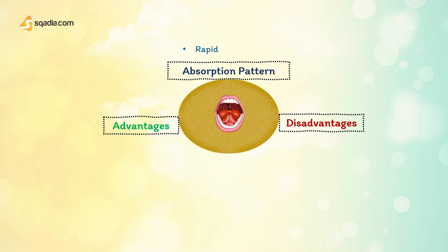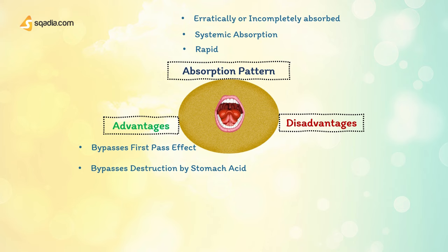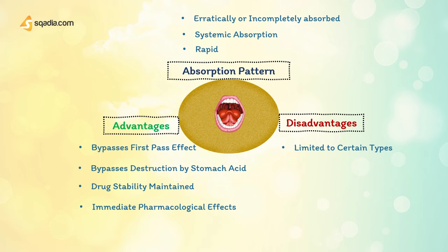The last route is sublingual. As the name indicates, such drugs are placed under the tongue, which then give their effect by diffusing into the blood through tissues. Its absorption pattern depends on the drug — a few drugs, such as nitroglycerin, have rapid, direct systemic absorption, while most drugs are partially or incompletely absorbed. Advantages are that it bypasses the first-pass effect, bypasses destruction by stomach acid, and drug stability is maintained because the pH of saliva is relatively neutral. Disadvantages include limitation to certain types and doses of drugs, and part of the dose may be lost if swallowed.